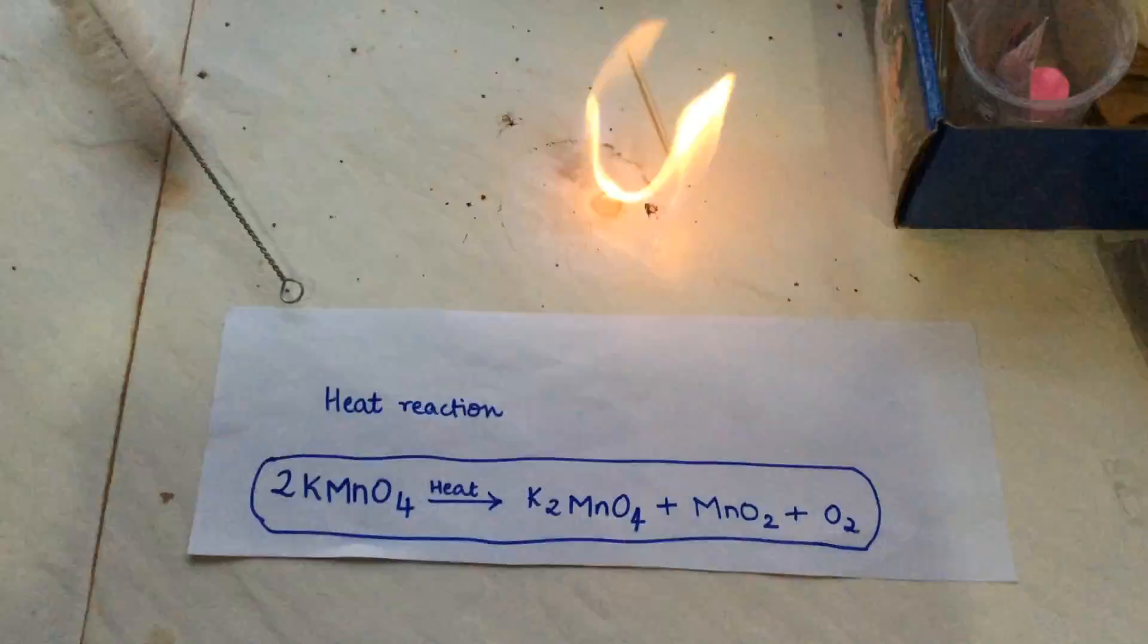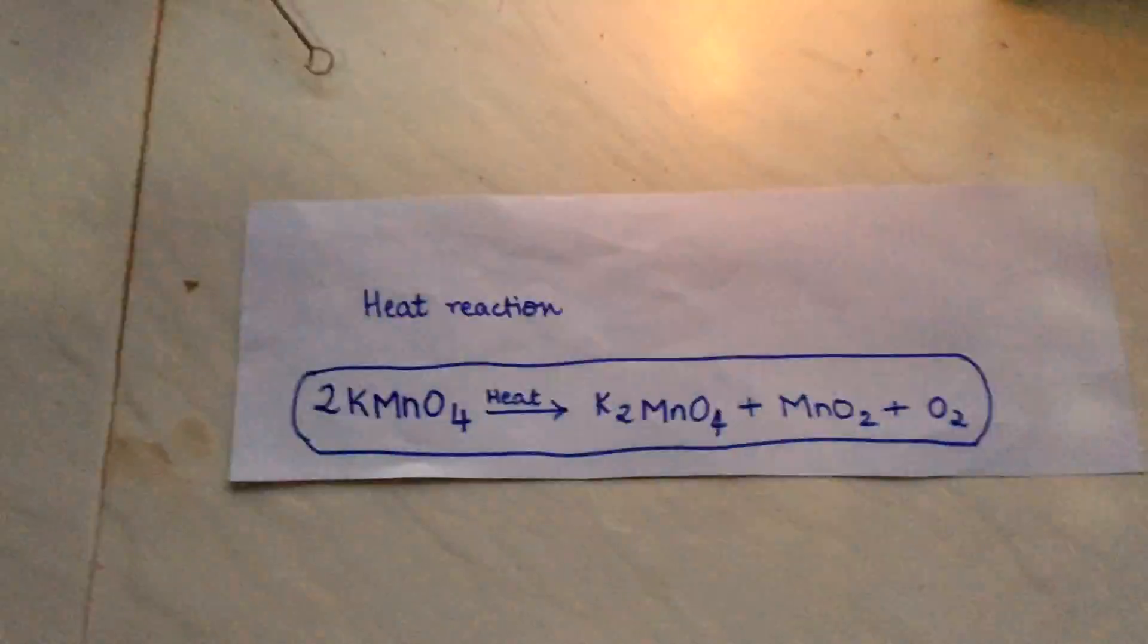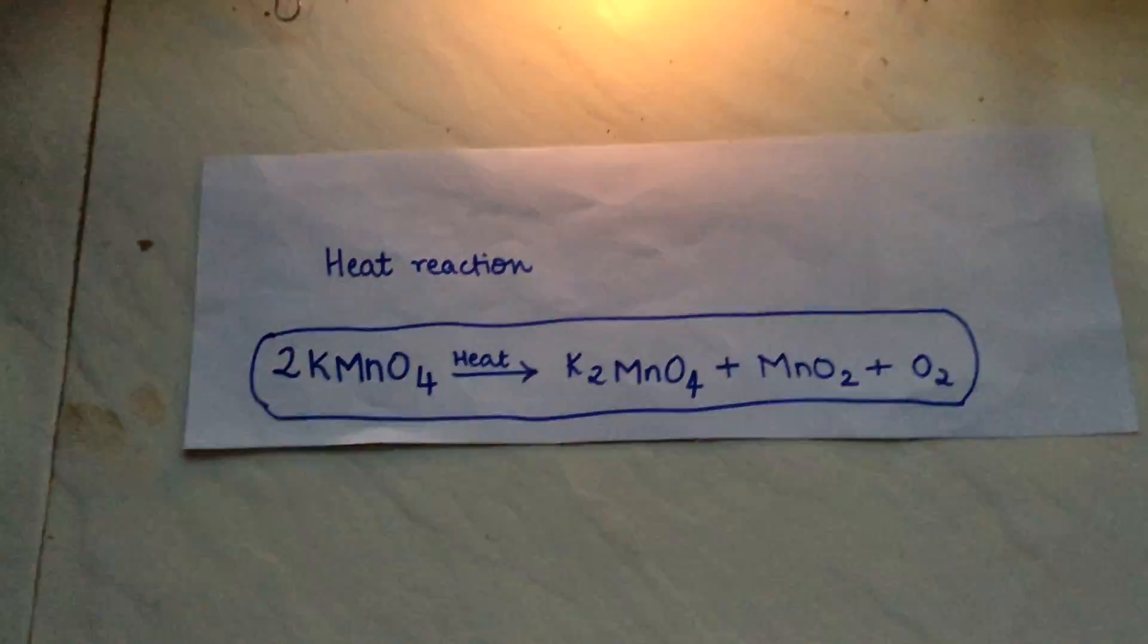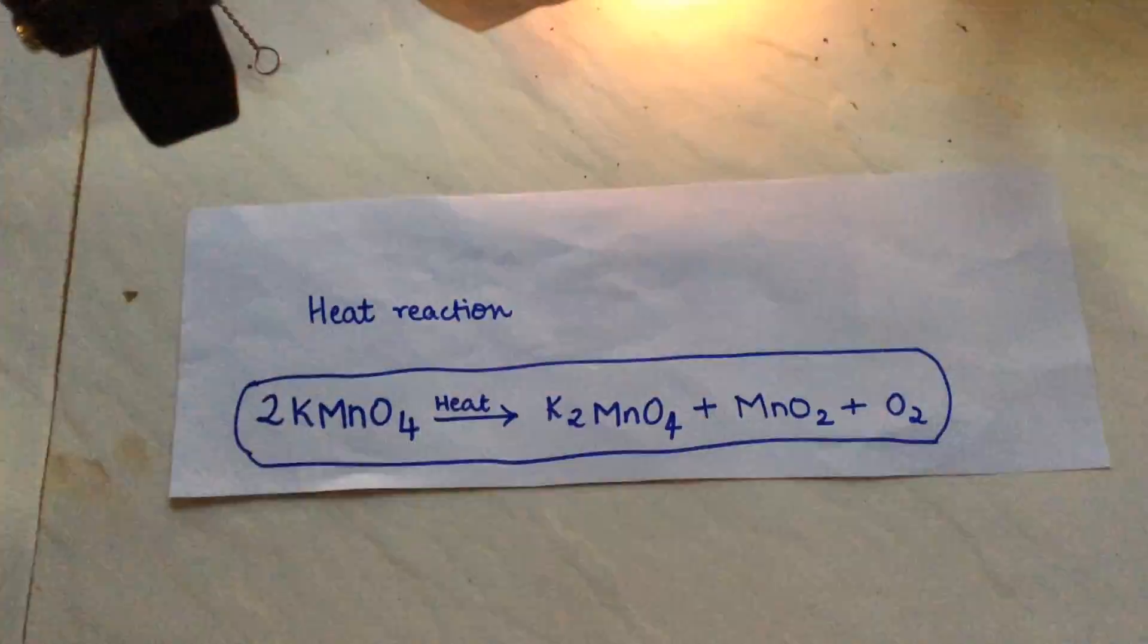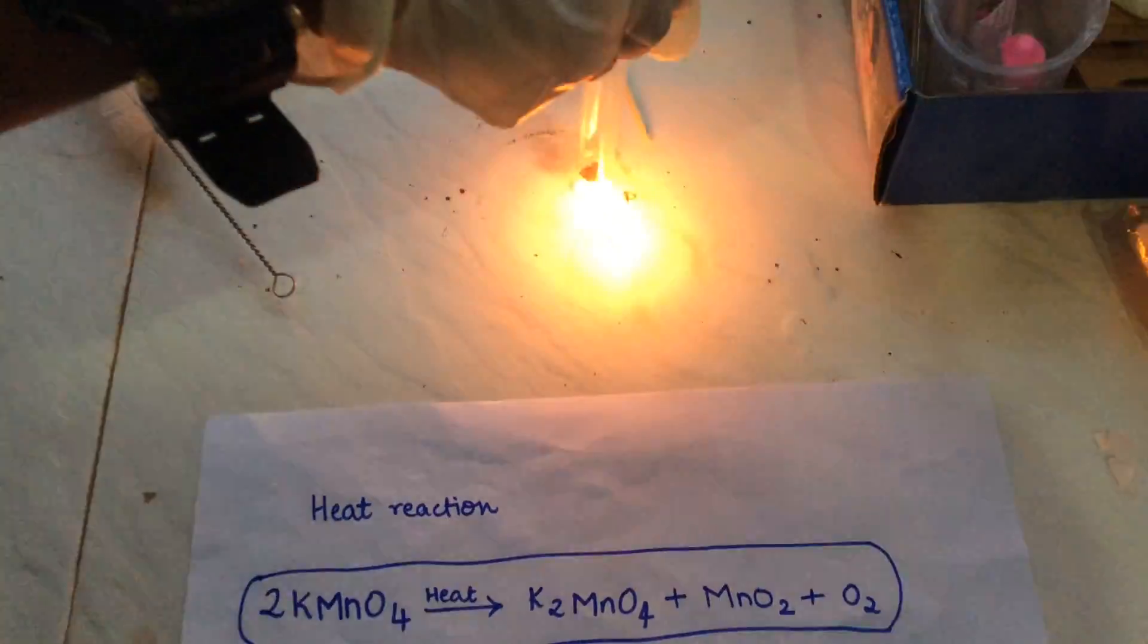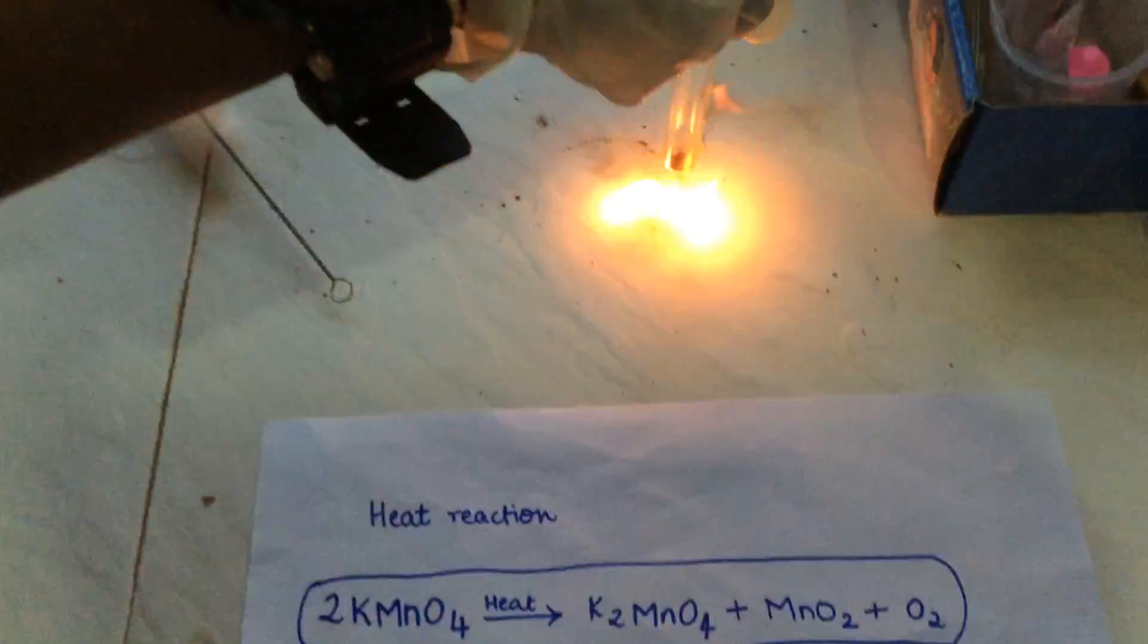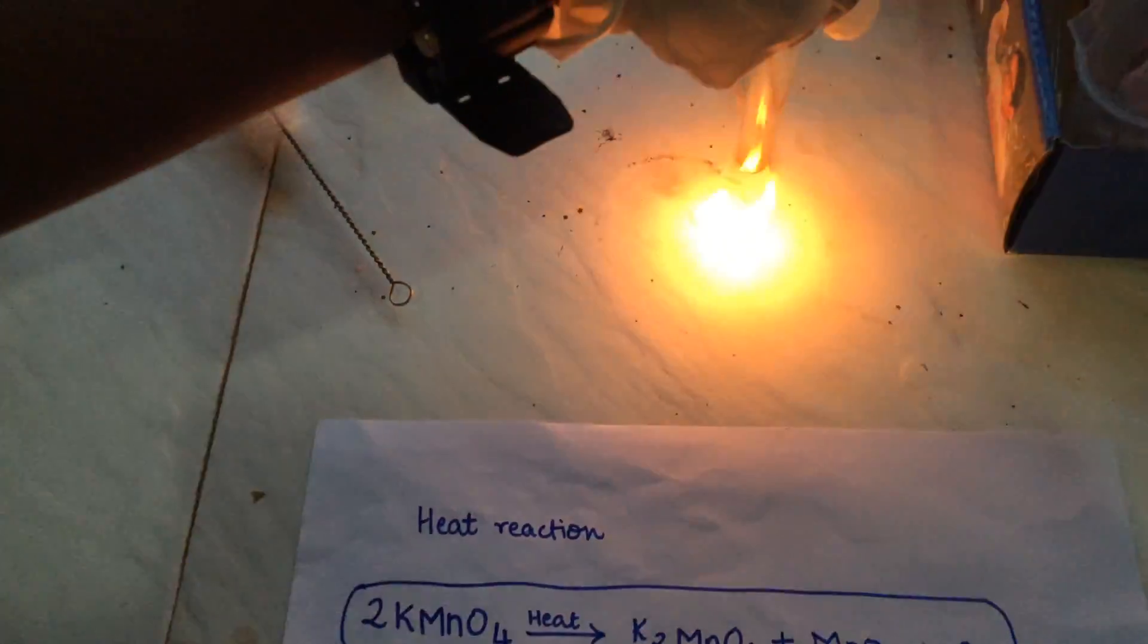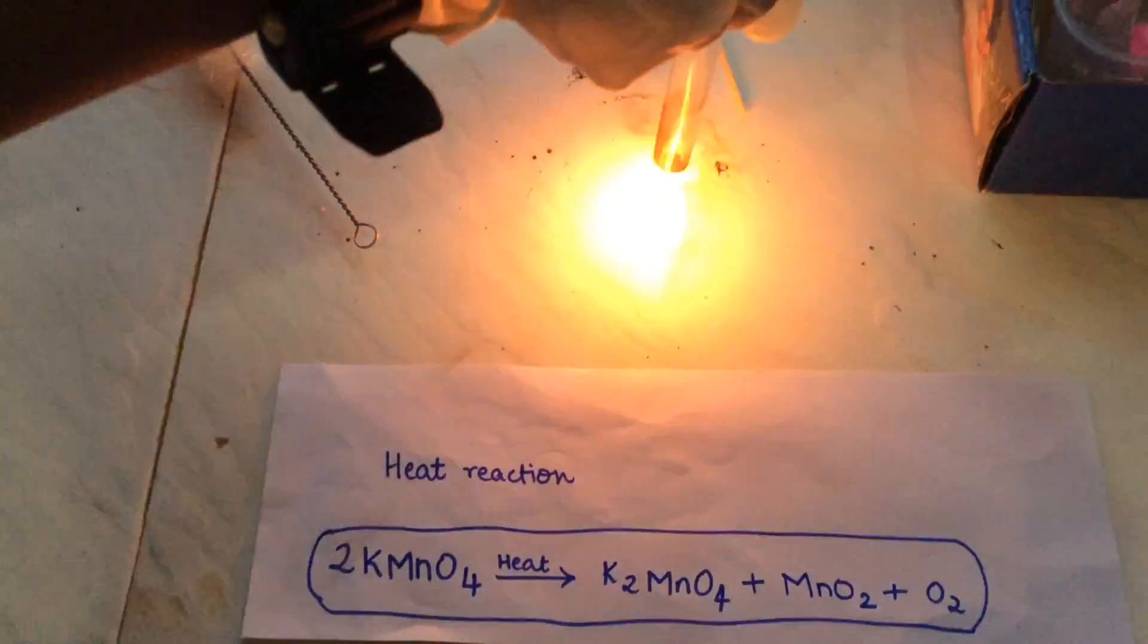Now this is your reaction. Heat reaction: 2KMnO4 provided by heat will give K2MnO4 plus MnO2 plus O2. Heat are only a little in the oxidizing flame.